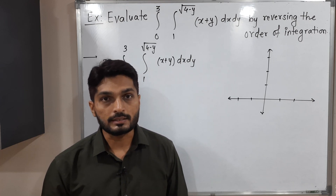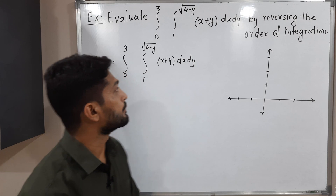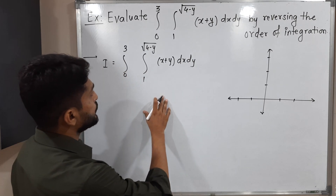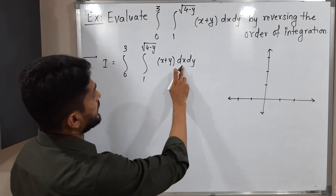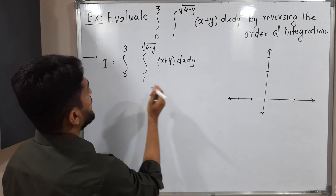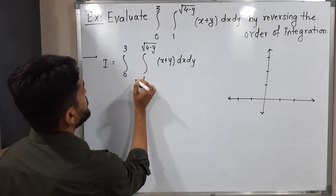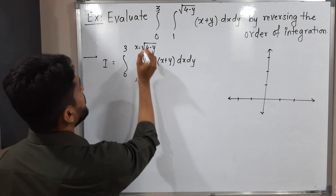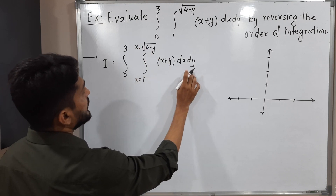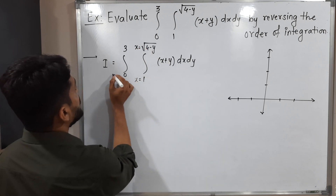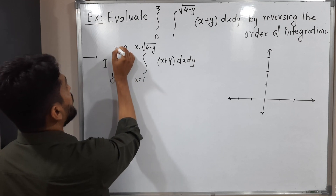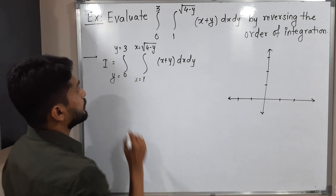So this is the double integration we have. The inner integration is with respect to x, so these are the limits of x. The outer integration is with respect to y, so these are the limits of y.